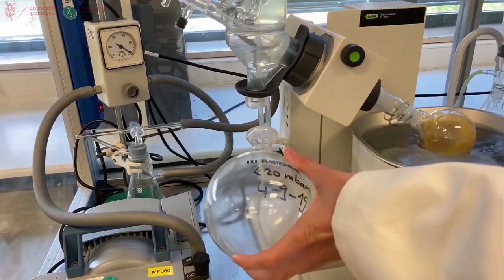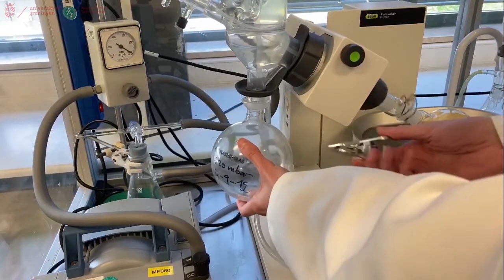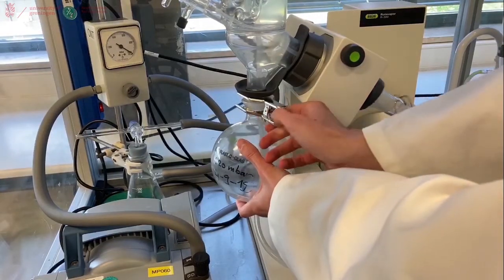Now that our waste flask is empty and dry, we can place it back on the Rotary Evaporator. And make sure to clamp it tight.